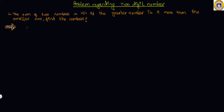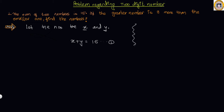Let the numbers be X and Y. Let us assume that X is the greater number. The first condition suggests that the sum of two numbers is 15, so X plus Y equals 15. This becomes our first equation.